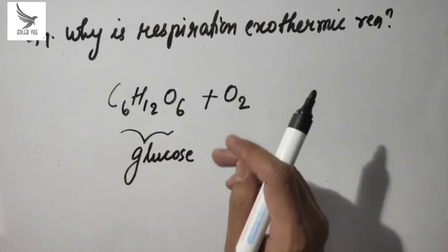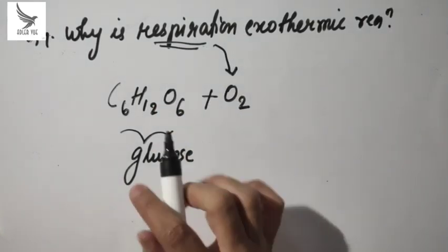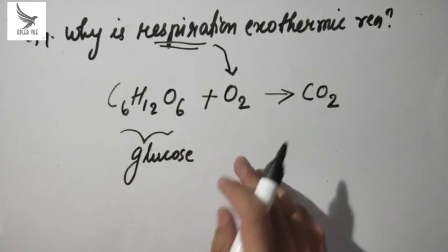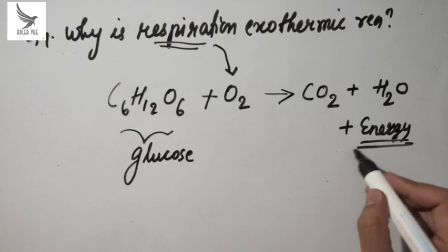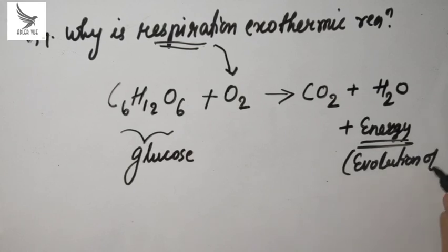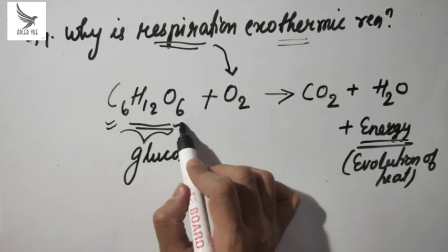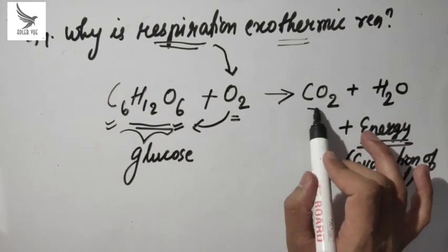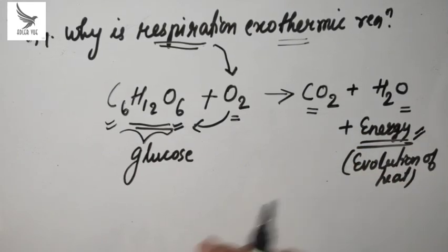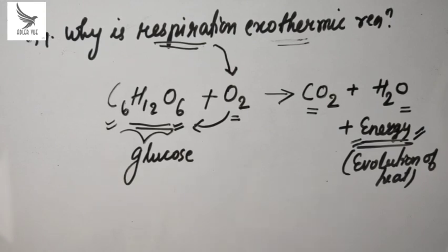The oxygen we inhale reacts with glucose. In respiration, O2 is brought in — when glucose reacts with oxygen, it forms carbon dioxide and also releases water and energy. Since we see evolution of energy, that is evolution of heat, it is called exothermic. The complex food we take in is broken down to the simpler compound glucose, which reacts with oxygen from respiration, and carbon dioxide, water, and an enormous amount of energy are released. Since energy is released, that is why respiration is known as an exothermic reaction.